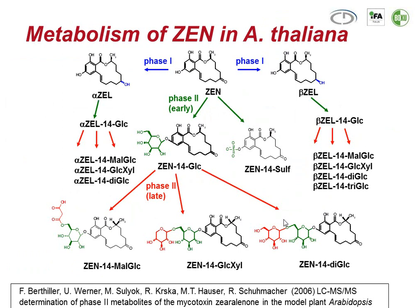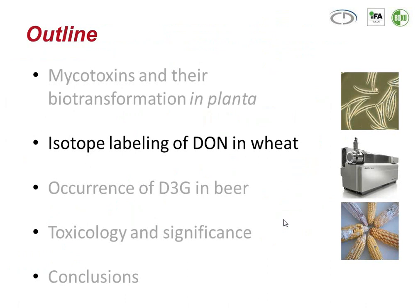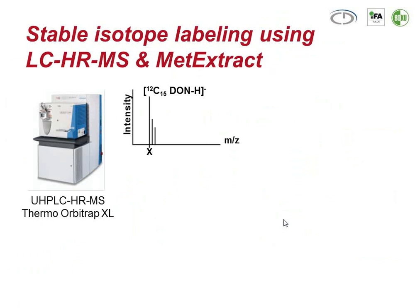The next question really is, how can we detect masked mycotoxins? I briefly want to introduce just one possibility to do so. Being an analytical chemist working a lot with mass spectrometry, I contributed to one method using liquid chromatography high-resolution mass spectrometry with a special software tool that we developed called METICSTRUCT.